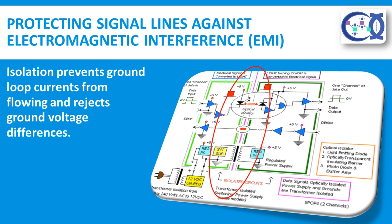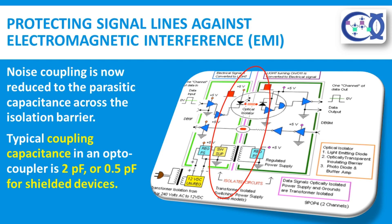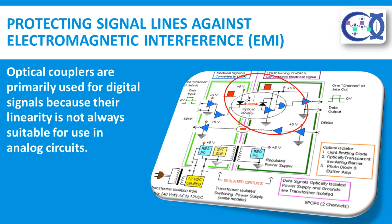Isolation prevents ground loop currents from flowing and rejects ground voltage differences. A popular method of isolation involves the use of signal conditioners based on transformers or optical couplers. In either case, the common mode noise voltage appears across the isolation device internal to the signal conditioner. Noise coupling is now reduced to the parasitic capacitance across the isolation barrier. Typical coupling capacitance in an optocoupler is 2 pF, or 0.5 pF for shielded devices. Coupling can be further reduced with the use of LEDs, photodiodes, and fiber optic cables. Faraday shielding can also be used in transformers to reduce coupling. Optical couplers are primarily used for digital signals because their linearity is not always suitable for use in analog circuits.